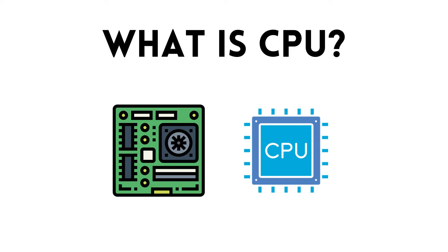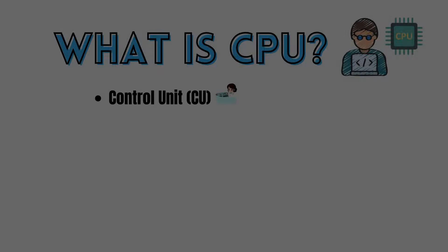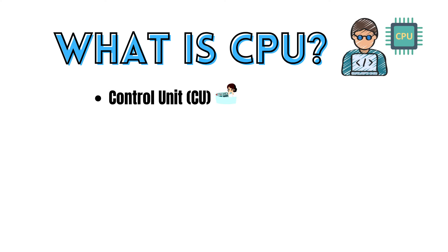Here are the key components and functions of a CPU. Let's find out what the control unit is used for in the CPU. The control unit is responsible for coordinating and managing the activities of the CPU.